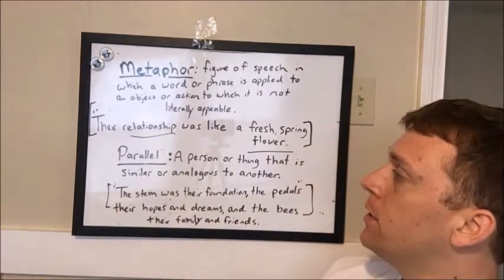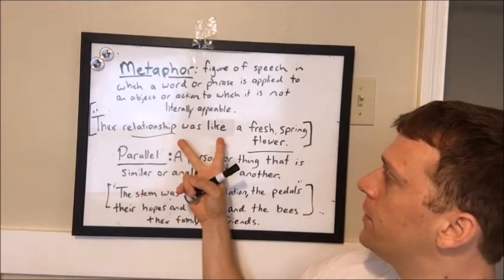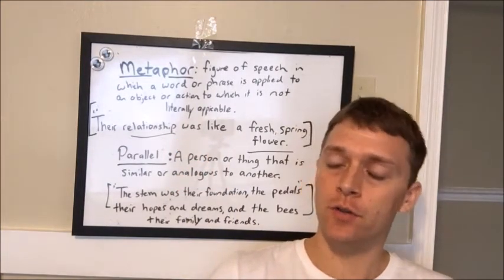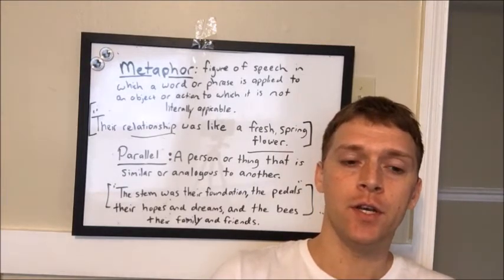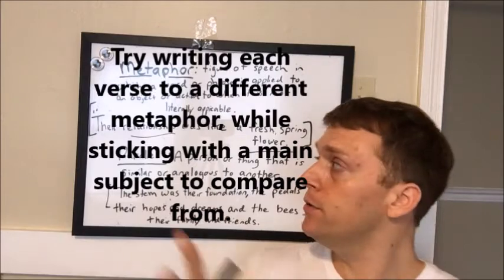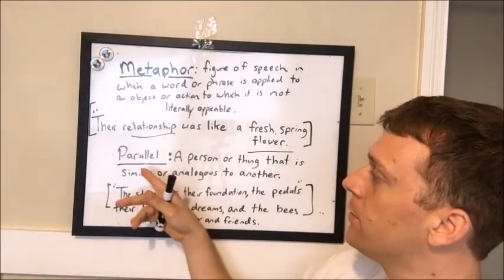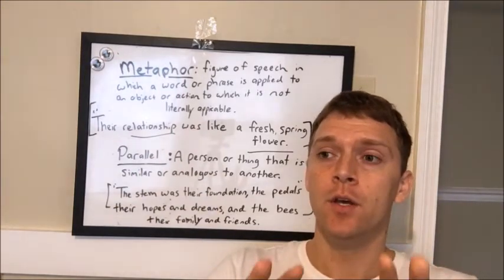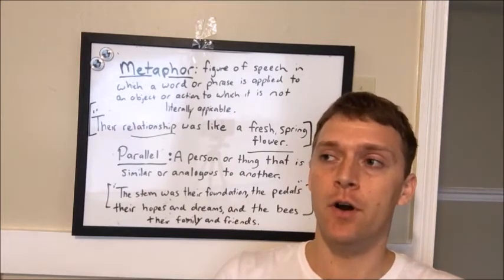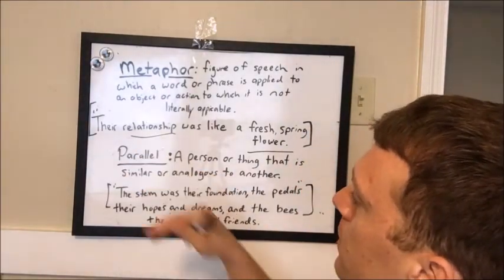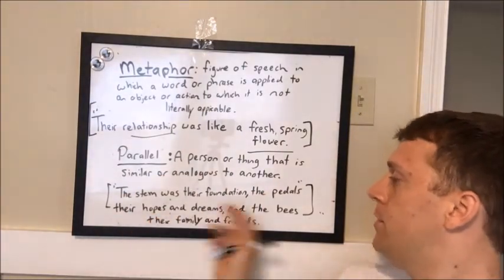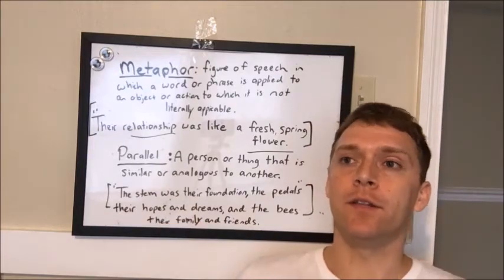This idea of using one main metaphor consisting of two different ideas can be useful when you're working on a song and you're struggling during that second or third verse, trying to look for fresh ideas to more thoroughly establish your song idea. The use of metaphors and drawing similarities and parallels from your main metaphor could be a very useful technique in cultivating lyrics to finish your song. For example: their stem was their foundation, the petals represented their hopes and dreams, and the bees that surrounded the flower were like their family and friends.